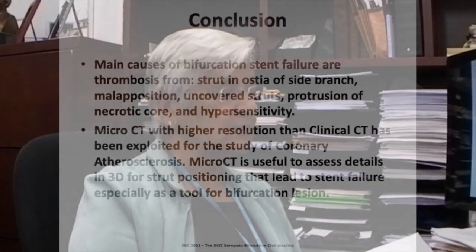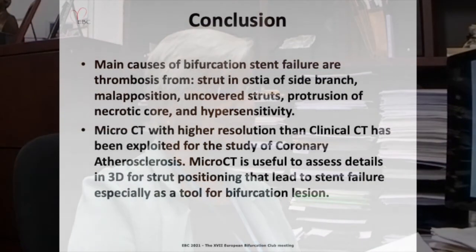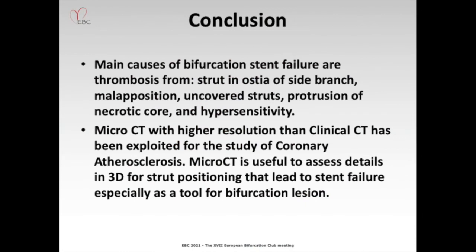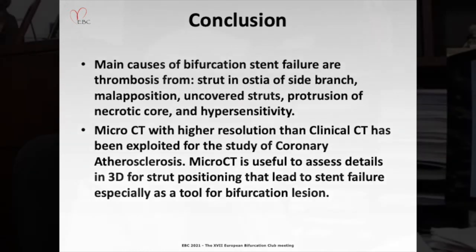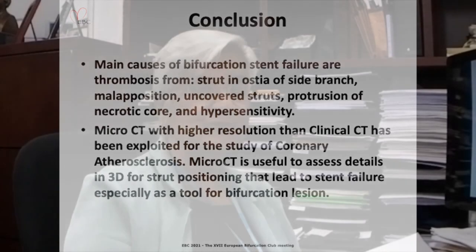In conclusion, the main causes of bifurcation stenting failure are thrombosis from strut and ostial side branch issues, malapposition, uncovered strut protrusion, necrotic core, and hypersensitivity. MicroCT, with higher resolution than clinical CT, has been explored for the study of coronary atherosclerosis and is useful to assess three-dimensional strut positioning details that lead to stent failure — especially as a tool for bifurcation lesions. Thank you.